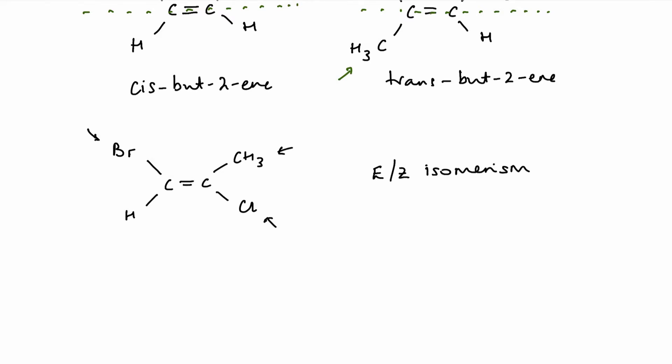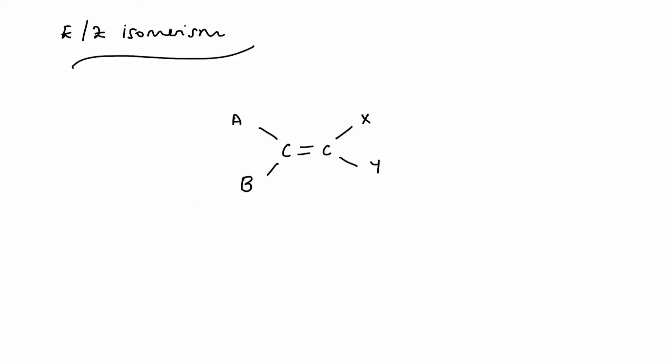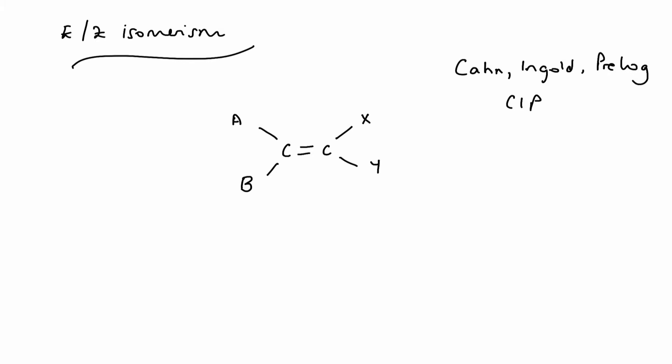E/Z isomerism comes with a set of rules that allows us to distinguish between isomers. E/Z isomerism uses a systematic set of rules for assigning priority, based on the rules devised by Robert Cahn, Christopher Ingold, and Vladimir Prelog for naming enantiomers. These are often known as the Cahn-Ingold-Prelog, or CIP, rules.